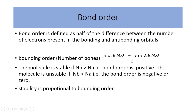Molecular orbital theory reveals some information about the molecule of interest. First, the bond order indicates the stability of the molecule. Bond order is the number of bonds between the atoms in the molecule, and it equals half of the difference between the number of electrons in the bonding and antibonding orbitals. If the electrons in the bonding orbitals are greater than those in the antibonding orbitals, the bond order is positive, meaning the molecule is stable. Conversely, when the electrons in bonding orbitals are fewer, the bond order is negative and yields an unstable molecule. Stability is proportional to bond order.